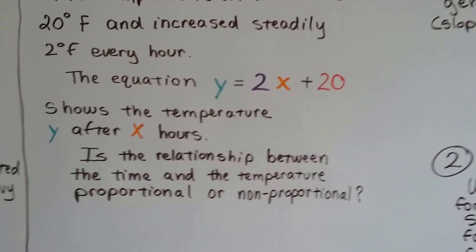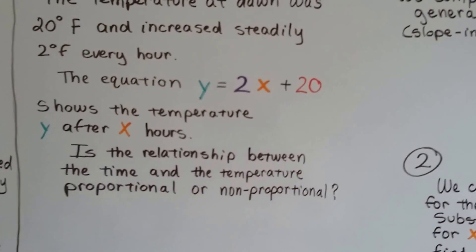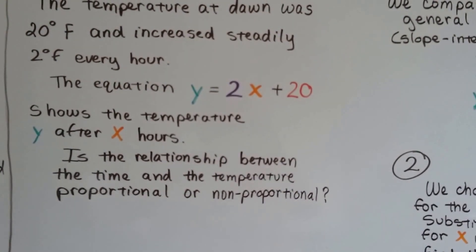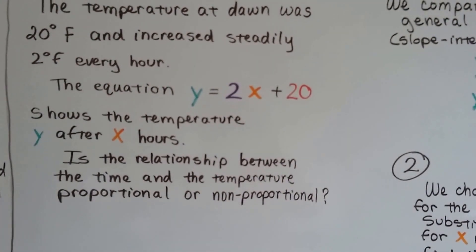It shows the temperature y after x hours. Is this relationship between the time and the temperature proportional or non-proportional? Do you remember our video about y-intercept B?